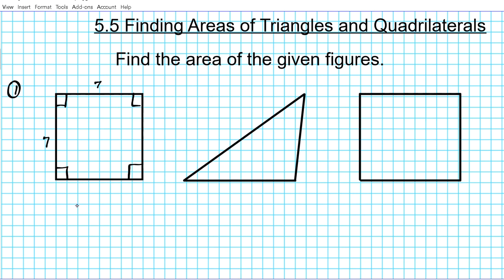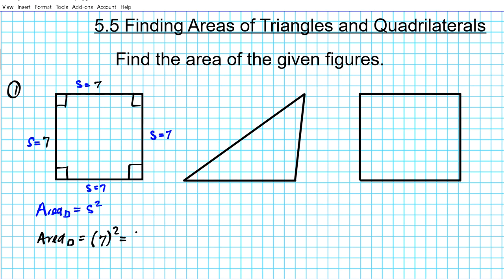The formula for the area of a square is side squared, or side times side. In this particular problem the sides are all seven. We can use the rectangle formula here because remember, every square is a rectangle, but not all rectangles are squares. So the area of this square is going to be seven raised to the second power, which is seven times seven — 49 square units.